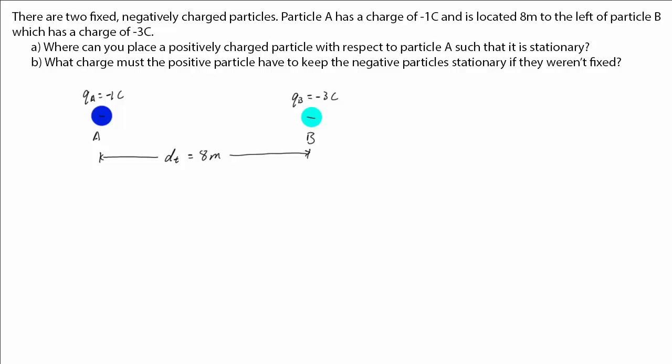We know that positive particles are attracted to negative ones, and so if we place the positive particle to the left of A, it will be pulled to the right by A and B. Thus it will experience a net force to the right, not 0.